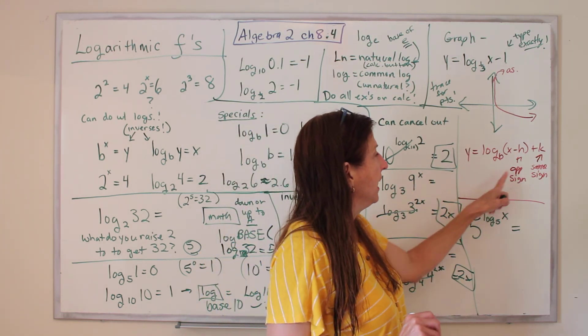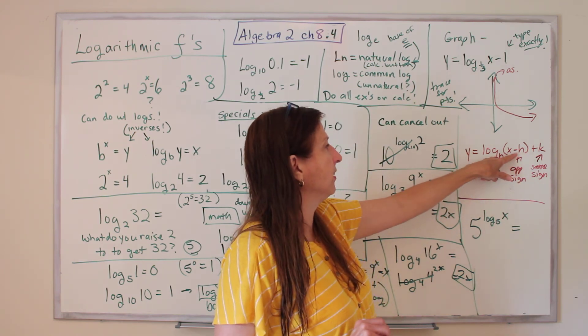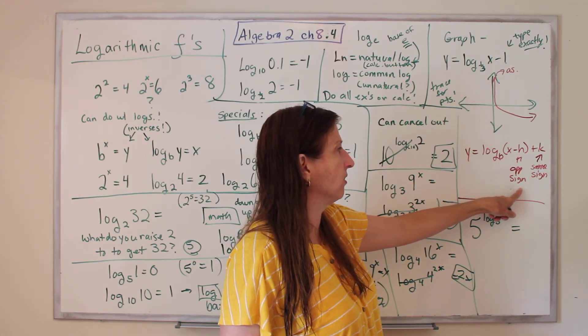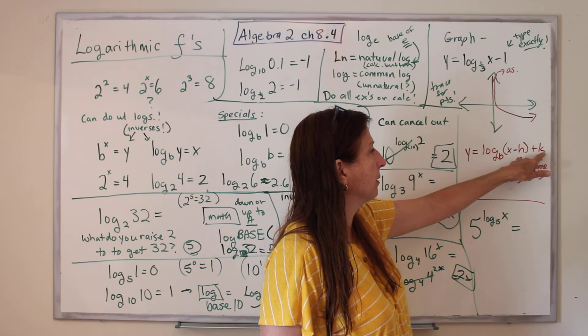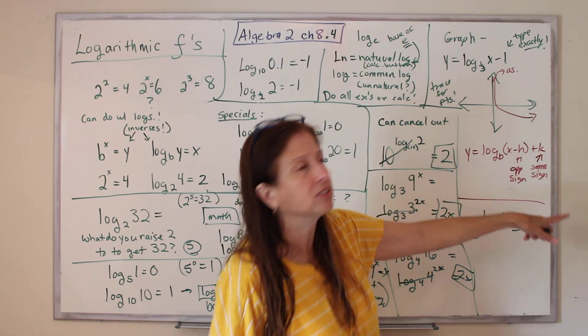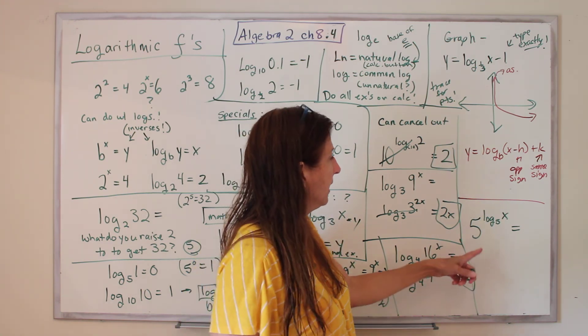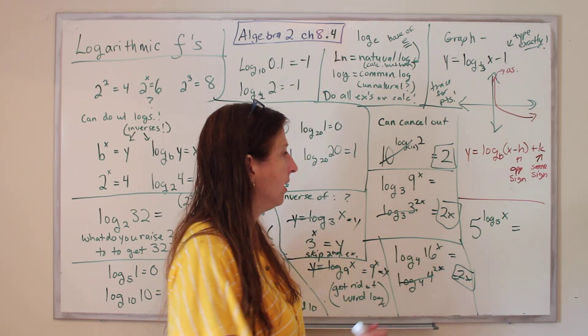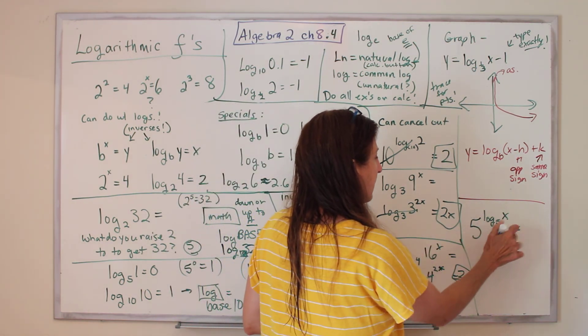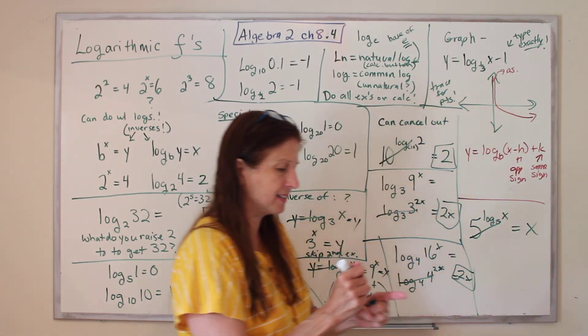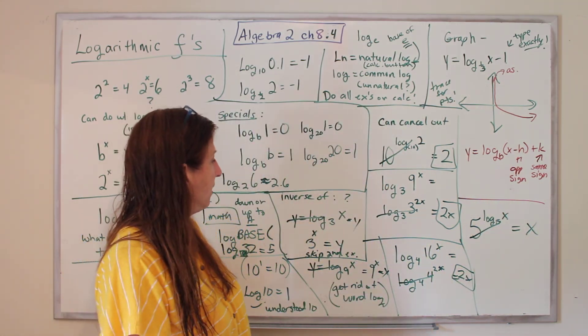Okay, so the shift, whatever is in parentheses with x is the horizontal shift, the opposite sign. The plus out by itself is the vertical shift, and it's the same sign, for vertical. Okay, so how about this one? What do we do? We have a base log, same base. We mark them all out. The answer is x. I love marking out.